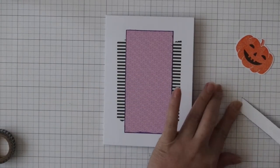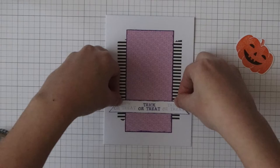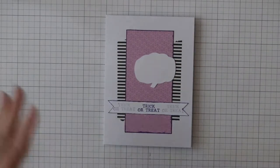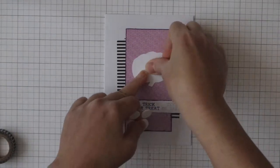I adhered the strip on the card. And I decided to use foam tape for the jack-o-lantern.